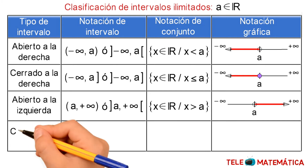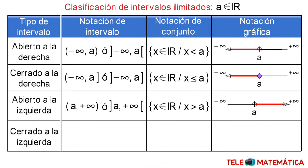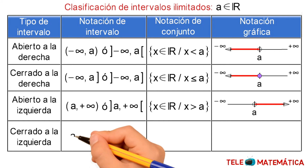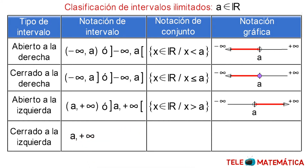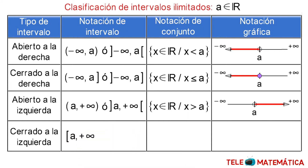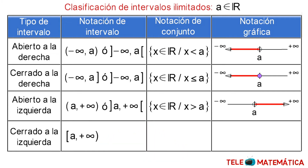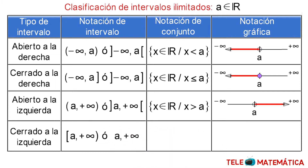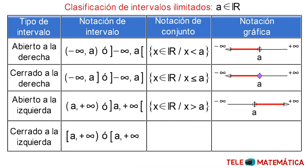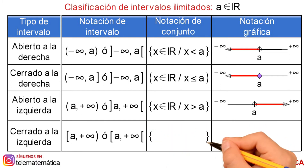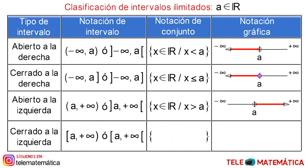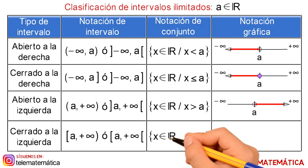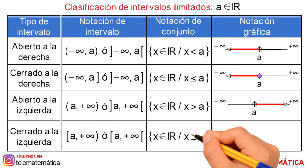Y la cuarta clasificación: intervalo cerrado a la izquierda, donde su notación de intervalo es A coma más infinito con corchete cerrado a la izquierda y paréntesis a la derecha, o A coma más infinito con corchete cerrado a la izquierda y corchete abierto a la derecha. Su notación de conjunto es, entre llaves, donde todos los valores de X pertenecen al conjunto de los números reales, tal que X es mayor o igual que A.